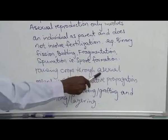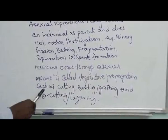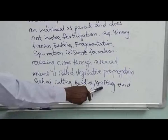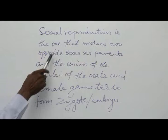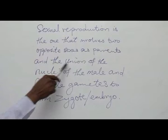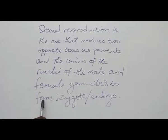Raising crops through asexual means is called vegetative propagation, such as cutting, budding, stock grafting, marcotting, and stock layering. Sexual reproduction is the one that involves two opposite sexes as parents and the union of the nuclei of the male and female gametes to form a zygote, or embryo.